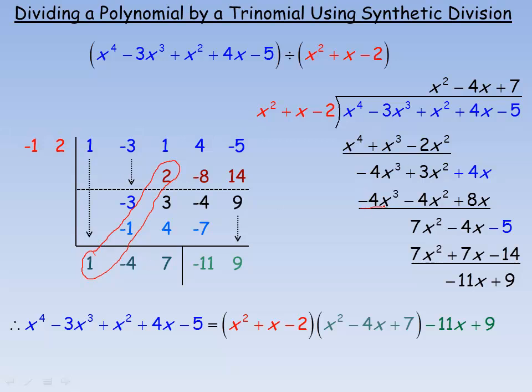If you look at the coefficients here, negative 4, negative 4, and 8. That's these coefficients right here. First number at the bottom is the same sign as in the long division. The second two numbers are opposites.